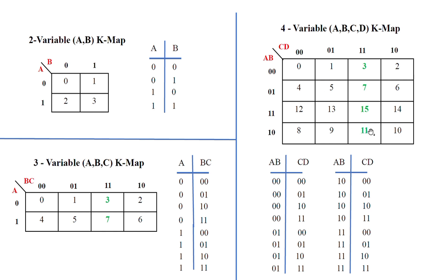The variables are represented as A, B on one axis and C, D on the other. The column headers follow Gray code order: 00, 01, 11, 10, and then again 00, 01, 11, 10 in the top row.